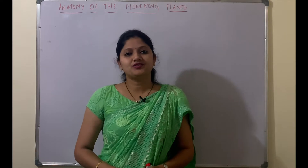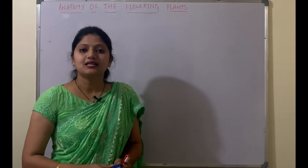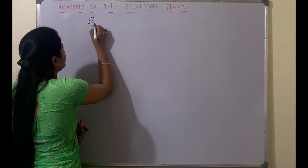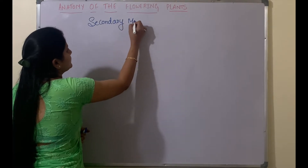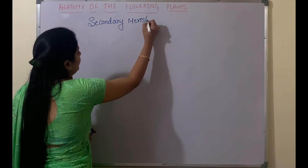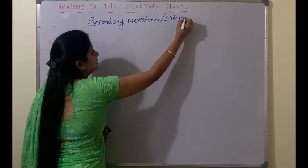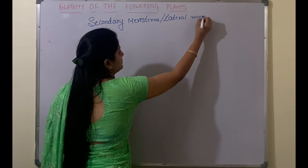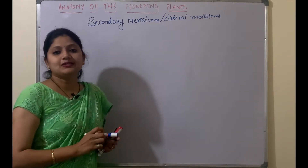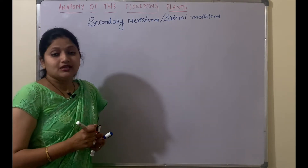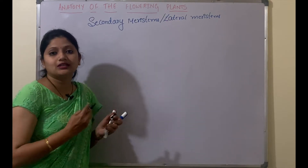Hello everyone. In this video we will take up the next group of meristems, that is the secondary meristems, which are also called as lateral meristems. These are the meristems which usually are produced on the lateral sides.